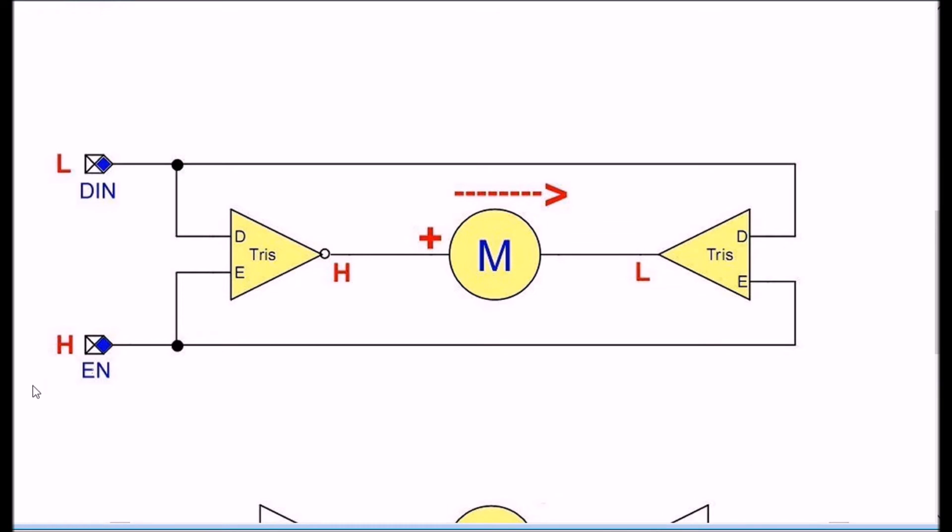Example number two: enable is high and DIN is low. Low is going to be inverted to a high on my left tri-state switch, but it's not going to be inverted on the right, so it's high-low. You get a current flow, plus to minus - motor reverses direction. If you want to shut it off, drive enable back to low.